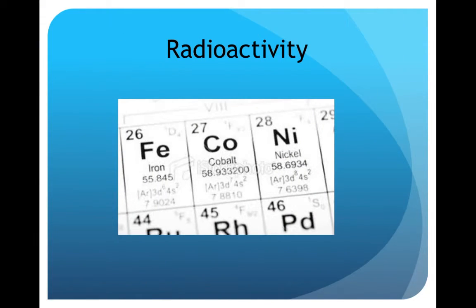It undergoes chain reactions and is very radioactive. For example, nickel-56 becomes stable by decaying to cobalt-56 then iron-56.